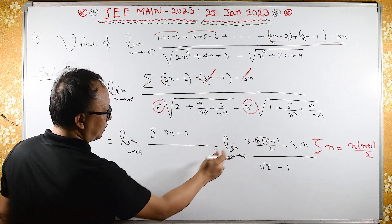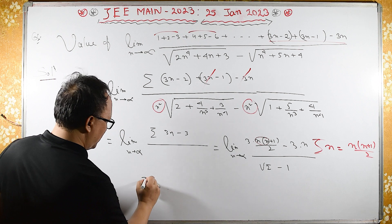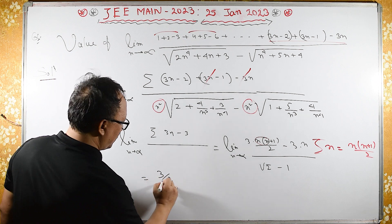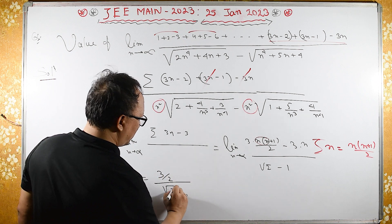And now what we have over here is, only we will have 3 by 2. So, we have 3 by 2 upon square root of 2 minus 1.